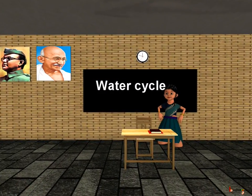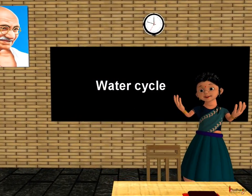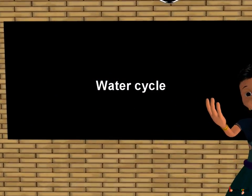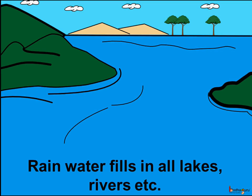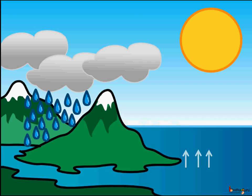Good morning children. Today we shall learn about the water cycle. We already know it is the rain which fills in all the lakes, rivers, etc. But the question is: what causes rain? Let us see.